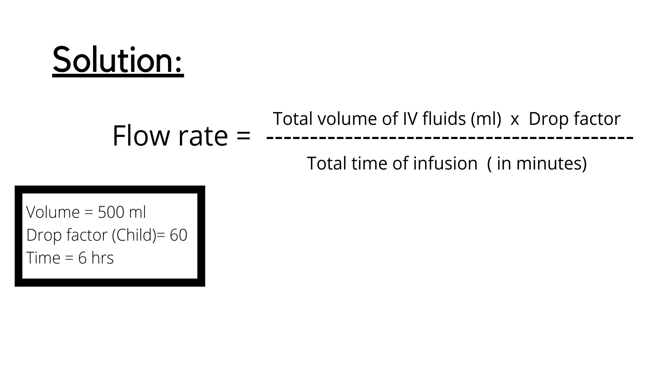So apply the formula: 500 times 60 divided by 6 times 60, equals 30,000 divided by 360, and the answer is 83 drops per minute.